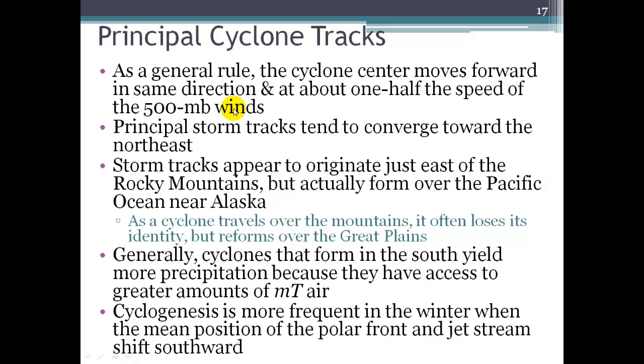It slows down. Why? Because of friction at the earth's surface. So these storm tracks that we'll see a map of here in just a moment, tend to converge toward the northeast. Everything's moving that way.